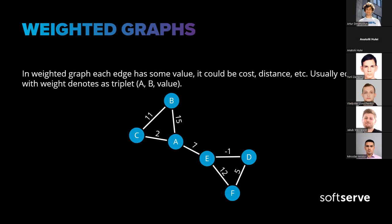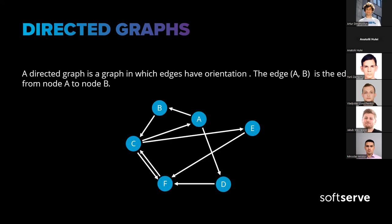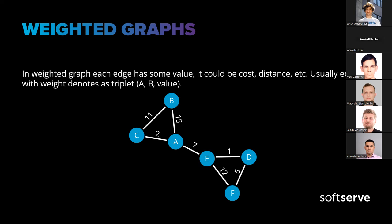The next type is a weighted graph. In a weighted graph, each edge has some value — it could be cost, distance, etc. Edges are usually denoted as a triplet (A, B, value), where A is the start of the edge, B is the finish, and value is its weight. For example on a map, the weight of an edge could represent the distance from one city to another. Weighted graphs can be directed or undirected as well.